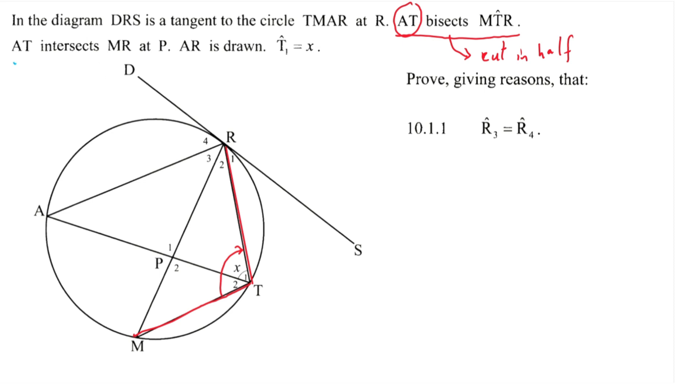in AT, AT would cut this angle in half. Therefore, this half should be equal to that half. And so since T1 is x, therefore T2 is x. Perfect. Therefore T2 is x, and so we can write that